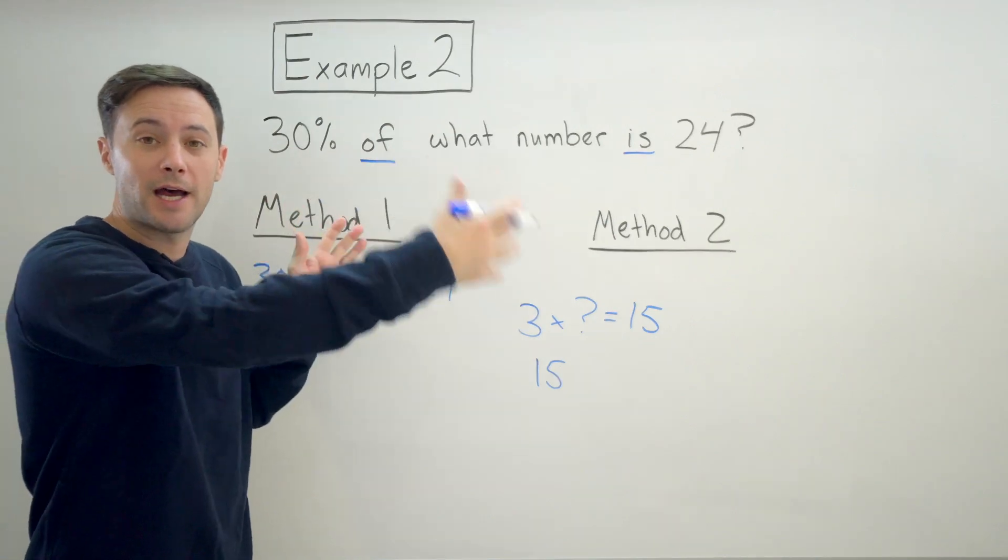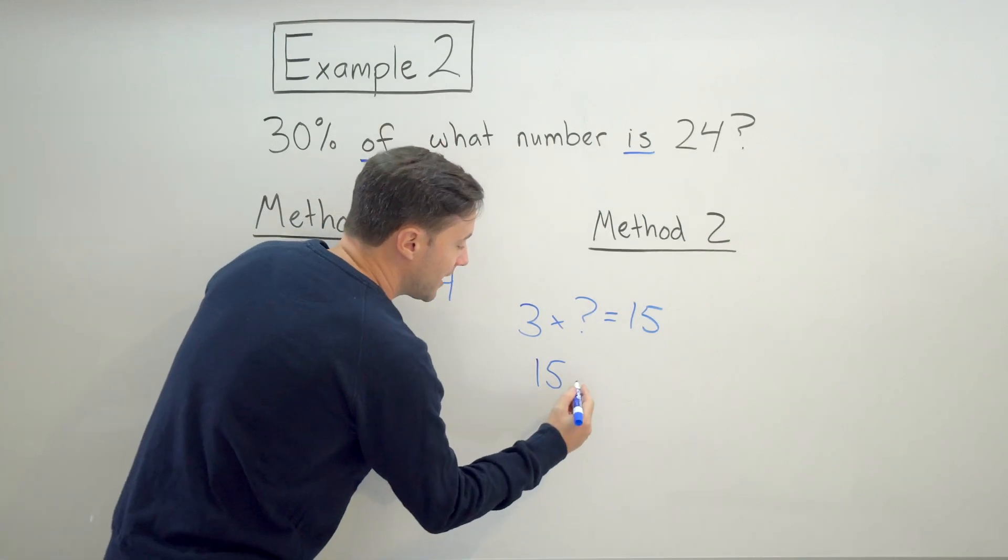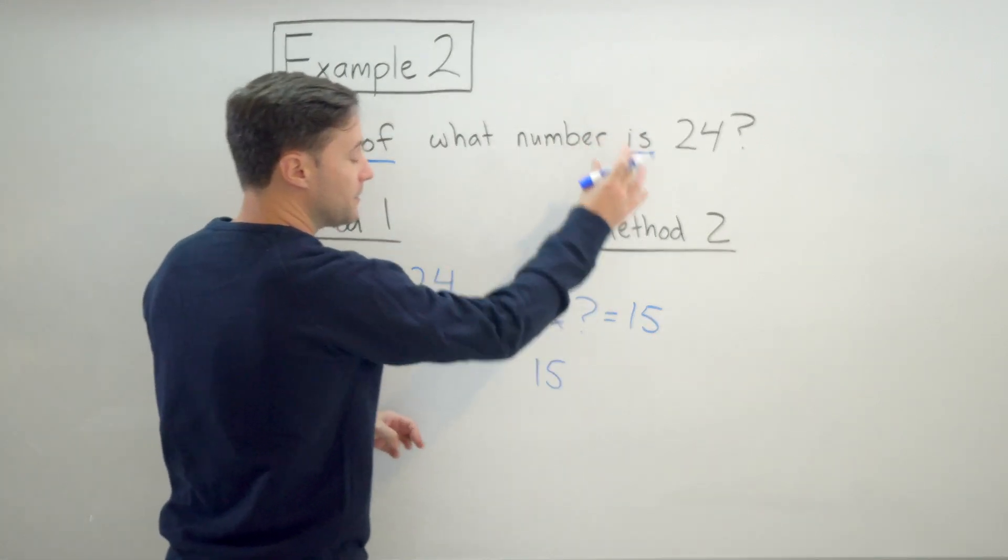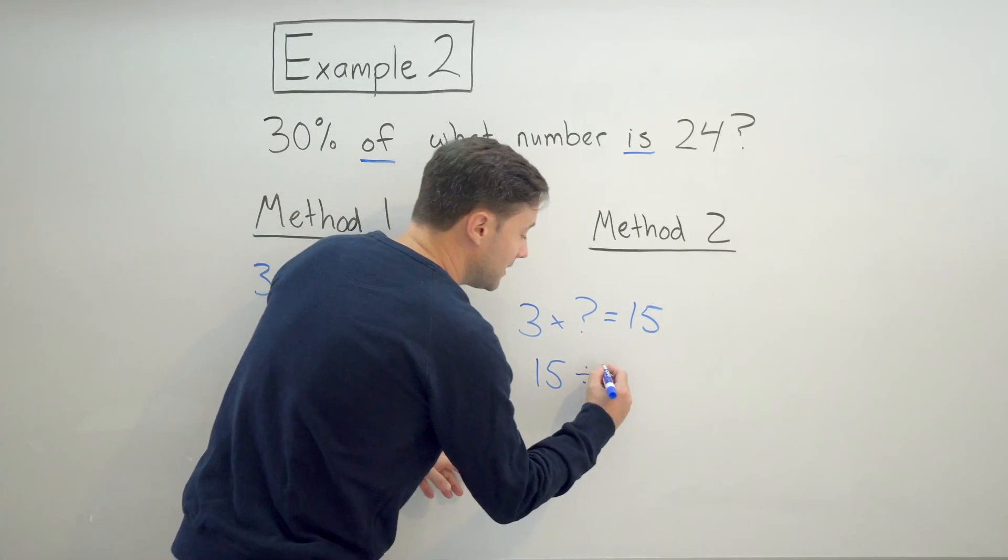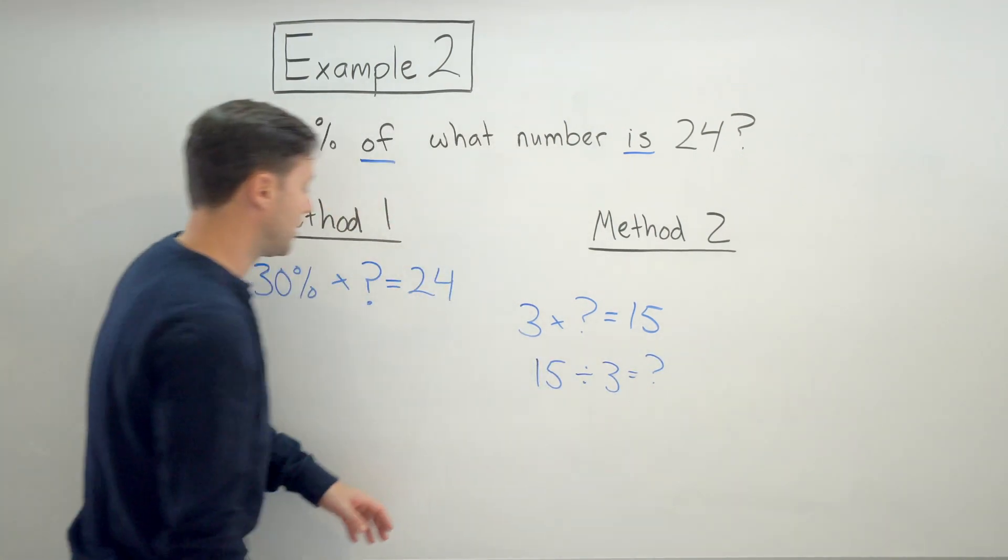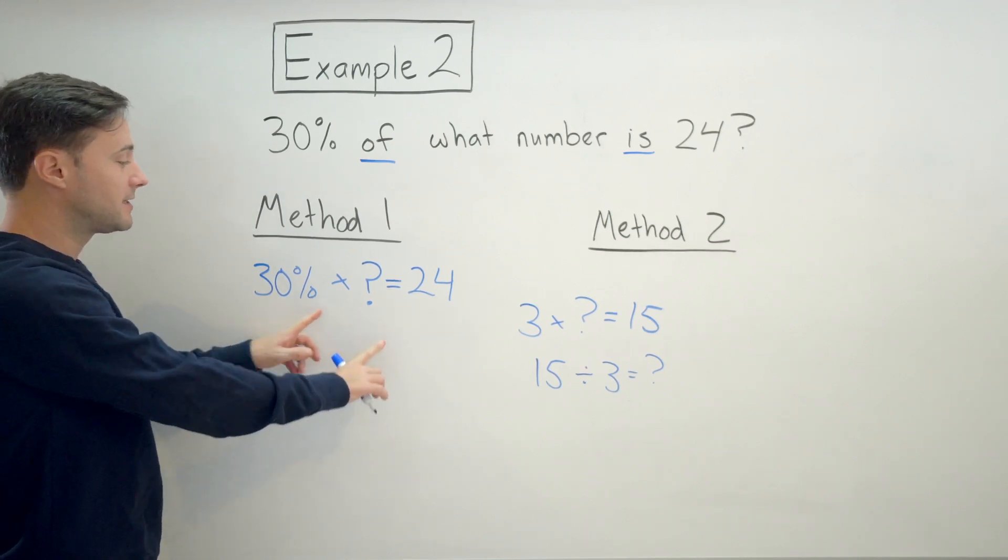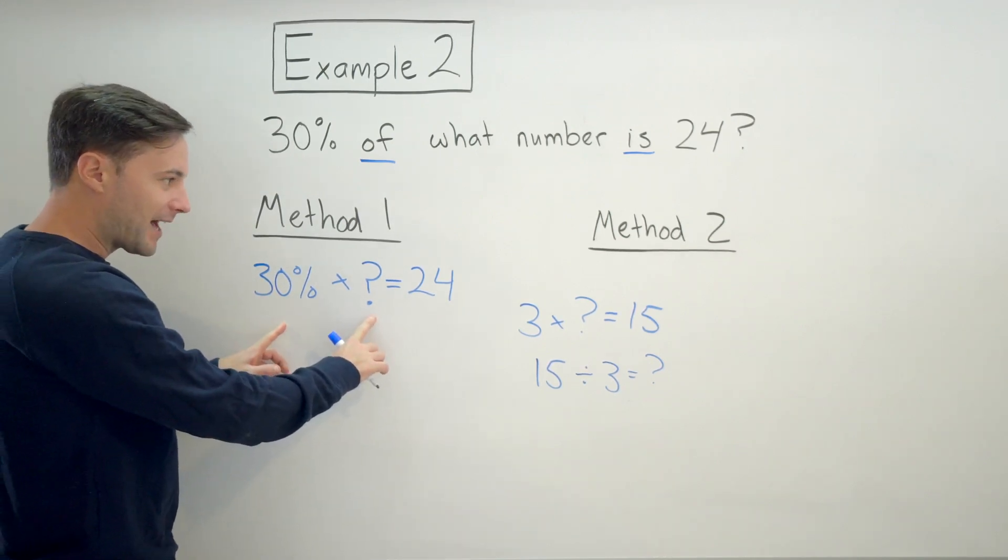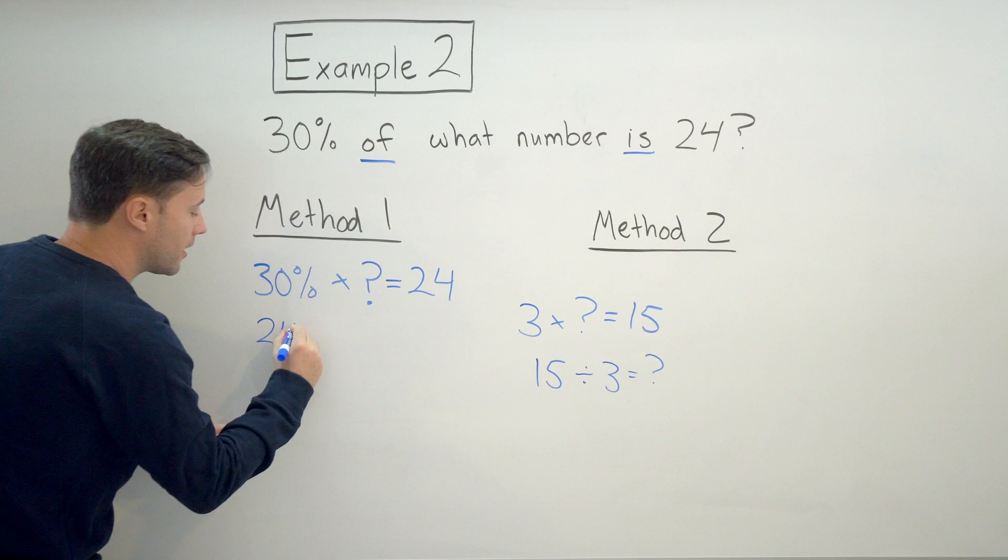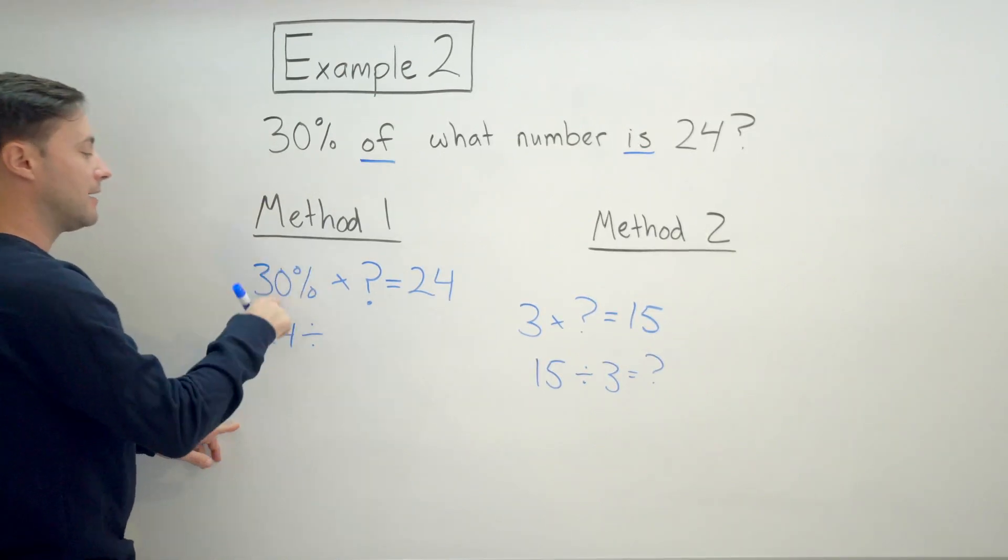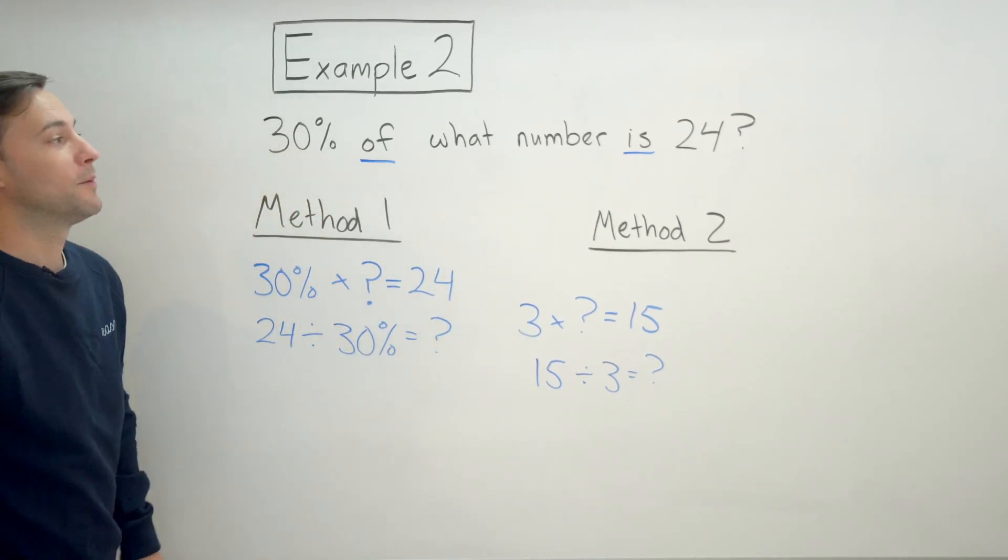So before we had a multiplication equation, right, we were multiplying the percent times the whole. What we're going to be doing now, instead, we are going to be taking that part and dividing it by that first number, the percent. So 15 divided by 3 will give us that question mark. So if we have something like this, where we're trying to find this number, 30% times something equals 24. To get that, all we need to do is the exact same thing we did here. So we're going to need to do 24 divided by 30% is going to give us that number that we're looking for.